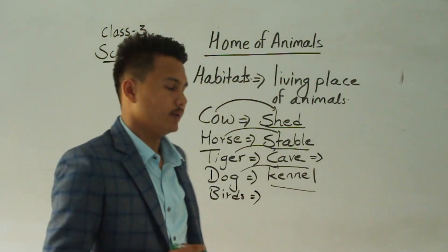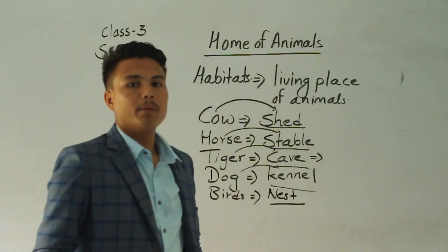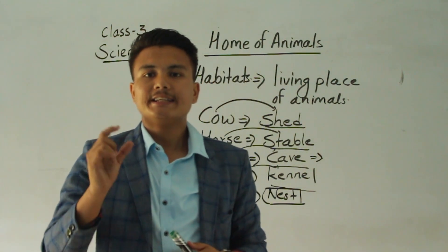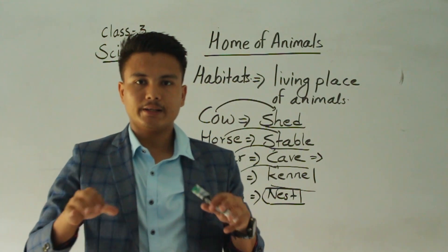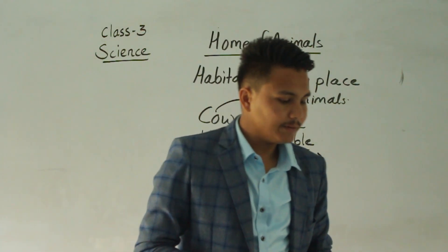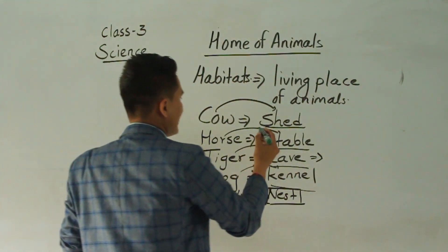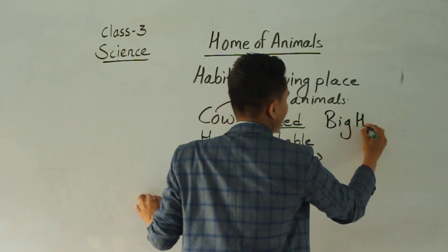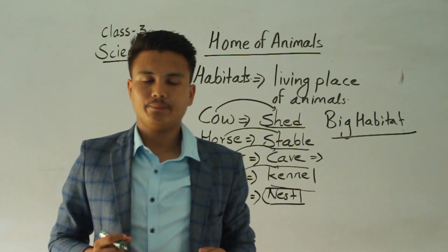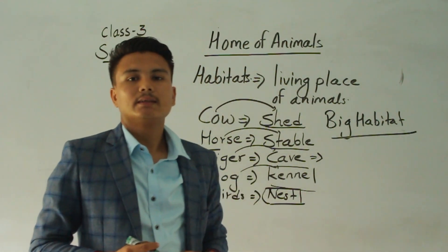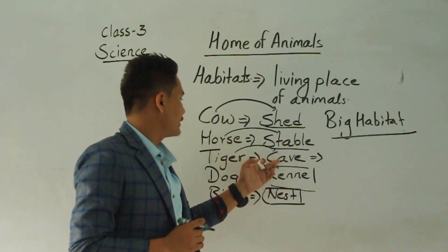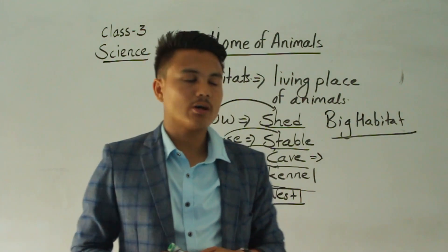Birds live in a nest. Birds make their nest by themselves by collecting small straws and small types of plants. They collect straw, hay, and other things to make a nest. Habitats can also be big, such as a forest. Some animals have big habitats like a huge jungle, while some animals have small habitats, like a cave or a stable.